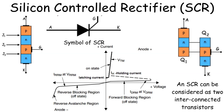Symbol of SCR. Now, look at the top-center part of the image. This is the symbol of an SCR. It looks like a diode with an additional terminal — the gate, which branches off to the right. The anode is connected to the P-type layer, while the cathode is connected to the N-type layer at the other end.